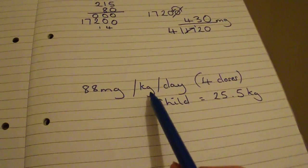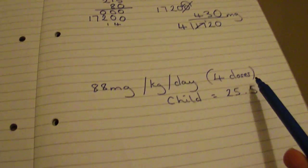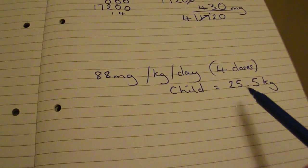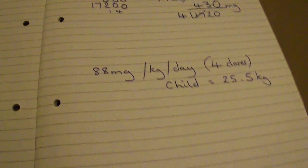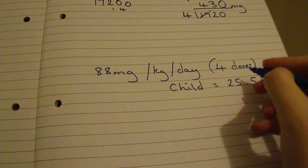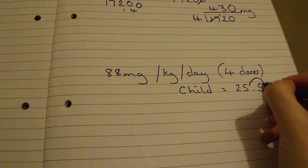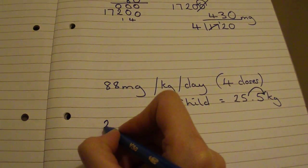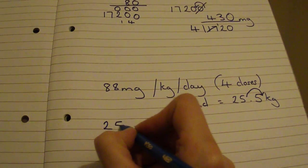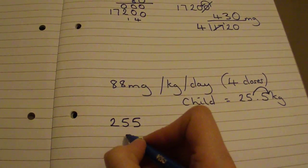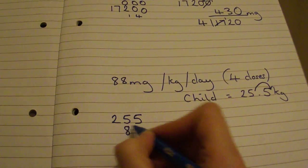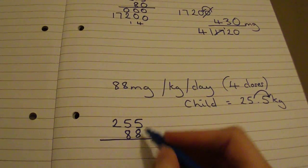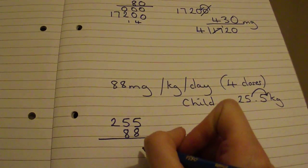On to the next one. This one is 88 milligrams per kilogram per day in 4 doses — same as the previous example — and the child weighs 25.5 kg. Taking the decimal point out leaves you with 255 times 88.